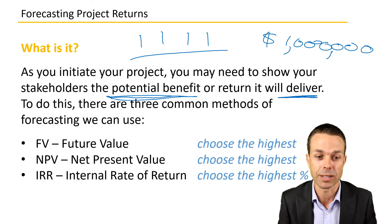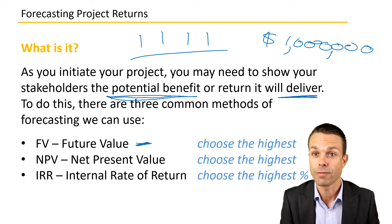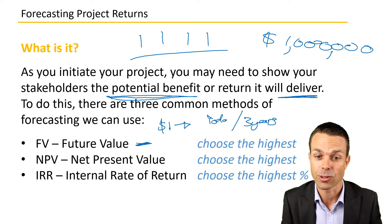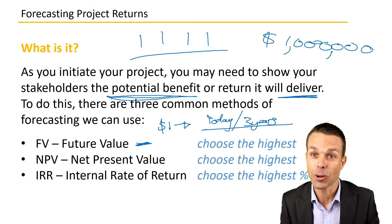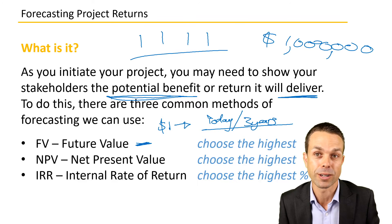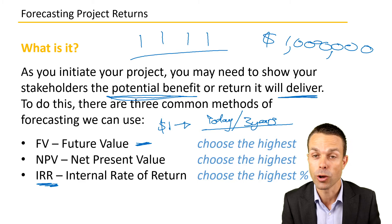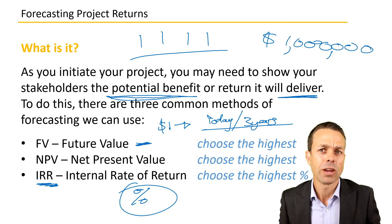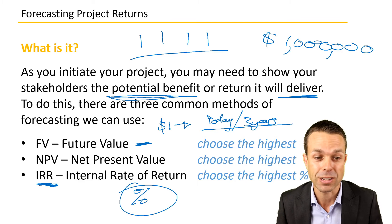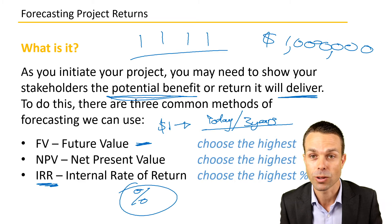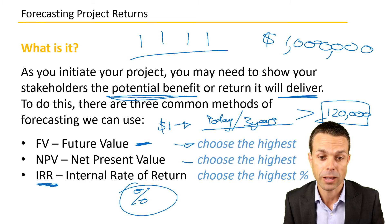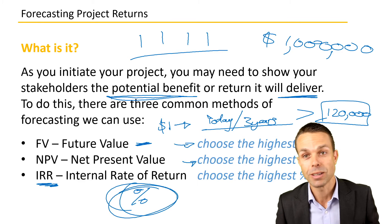The three methods are: Future Value, where we look at what a dollar today is worth in the future; Net Present Value, where we look at what a project's total outcome three years into the future is worth today; and Internal Rate of Return, shown as a percentage return in today's figures. On the PMP exam, simply choose the highest value for each — highest NPV, highest future value, and highest IRR percentage.